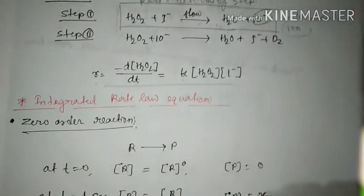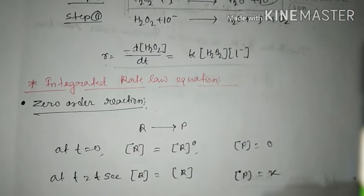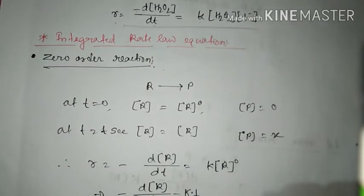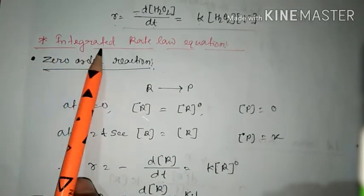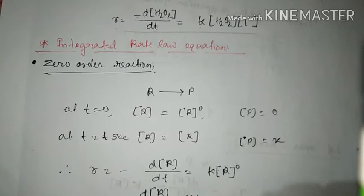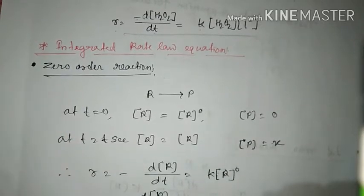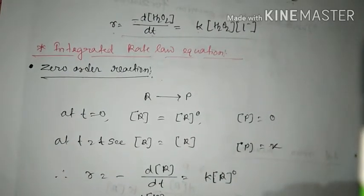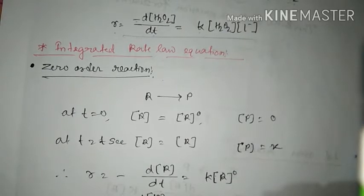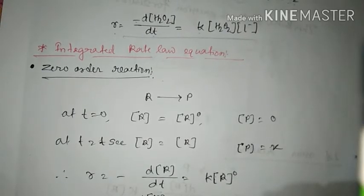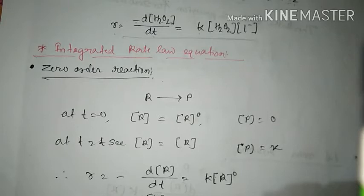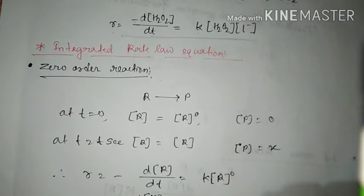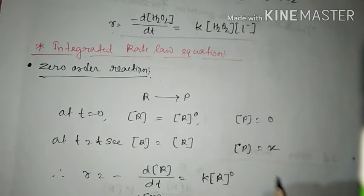Next, we will study about the integrated rate law equations. What does 'integrated' signify? Till now, we have just calculated and explained the instantaneous rate and average rate. Instantaneous rate means for an instant of time. In a reaction occurring from initial to final, so many instants may come.